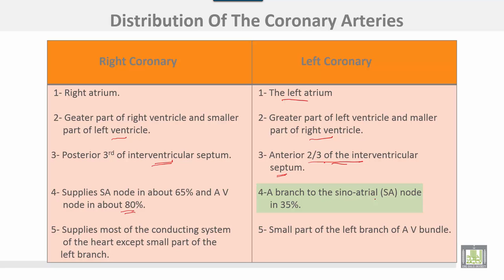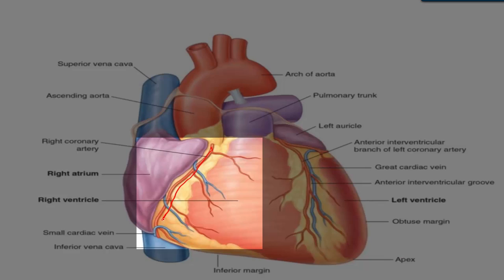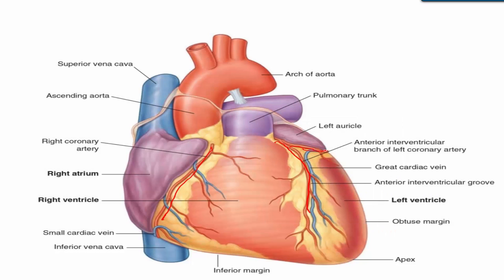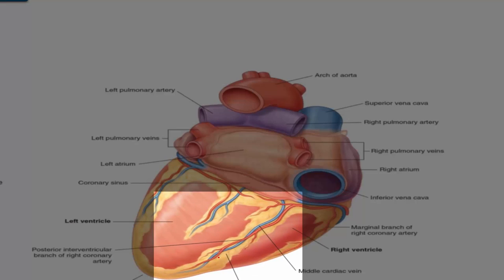From the left coronary, a branch to the SA node supplies about 35%. Smaller branches supply most of the conducting system of the heart from the right coronary, except a small part of the left branch of the AV bundle, which is supplied by the left coronary. The arteries visible here are the right coronary, the anterior interventricular branch of the left coronary, the circumflex branch, and the posterior interventricular branch from the right coronary artery.